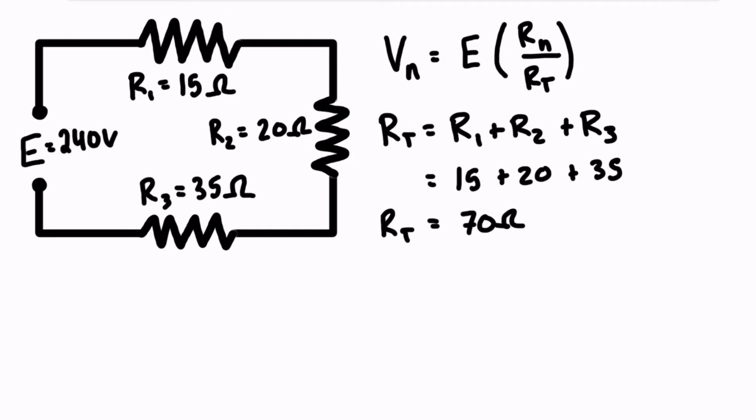All right, so what we can do is we can just run through each case here. Let's try to figure out what V1 is, the voltage drop across resistor one. That's going to be 240 volts times our ratio here of the individual resistor, which is 15 ohms over the total, which was 70 ohms. The ohms are going to cancel out, and 240 times 15 over 70 is just going to give us 51.4 volts. So if you're asked to calculate the voltage drop across that resistor, there you go, you've done it without having to use Ohm's law and current.